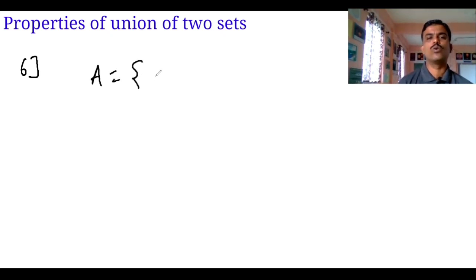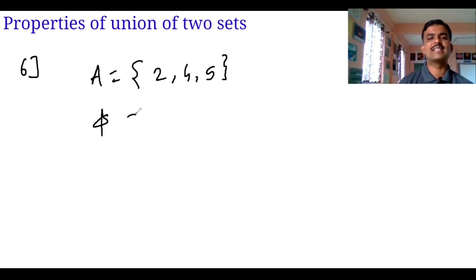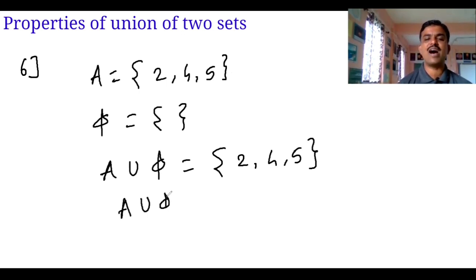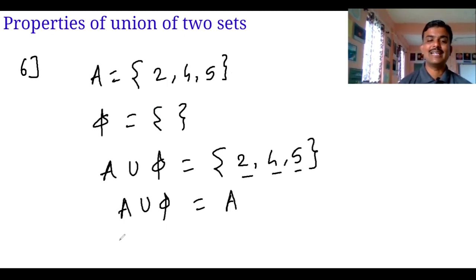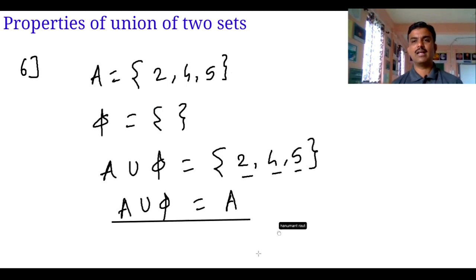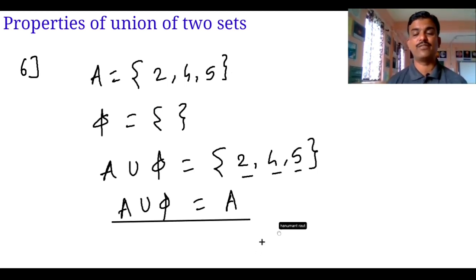Now checking the last property. Suppose A is equal to {2, 4, 5} and we take the union of A with the empty set. The answer is {2, 4, 5}, which is the same as A. So A union with the empty set equals A itself. This is the last property.